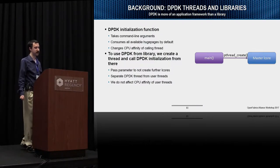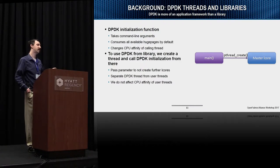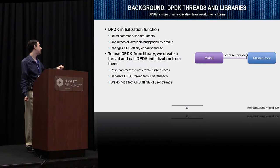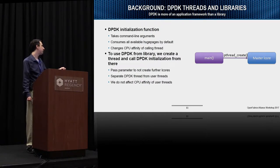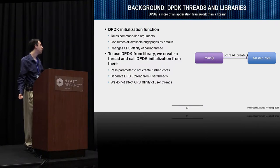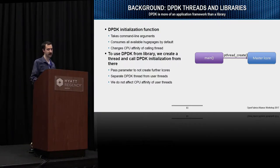The reason we do that is because DPDK was designed as more of an application framework than a library, so it does some things that are impolite for libraries to do. Since our verbs driver is a library, we want to be polite to the application calling us. DPDK's initialization function takes command line arguments, consumes all available huge pages by default, and changes the CPU affinity of the calling thread — this last one is the really impolite part, as it means any threads created after DPDK initializes all wind up bound to a single CPU core without the user knowing. Therefore, we tell DPDK not to create any L-cores other than the master we have pre-created, separating DPDK from user threads and not affecting their CPU affinity.